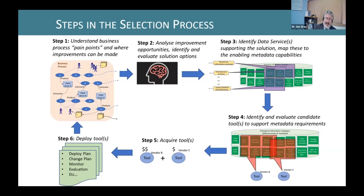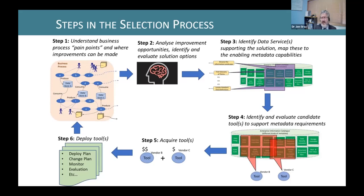Once you know what data services people need to consume, you can then look at the mapping of data services to particular kinds of metadata. Then look at that mapping of tools to specific kinds of metadata and find a tool that has good coverage of those metadata types your target business service needs. Once you've done that, there will usually be a small number of vendors that fit the bill. You then look at other factors such as license costs and support costs, come up with a deployment plan, deploy in a phased way, monitor and evaluate — making sure those tools are enabling the business services that business can consume.